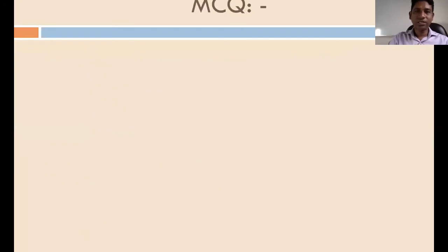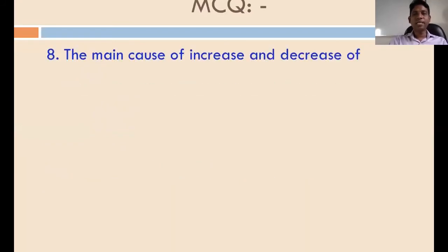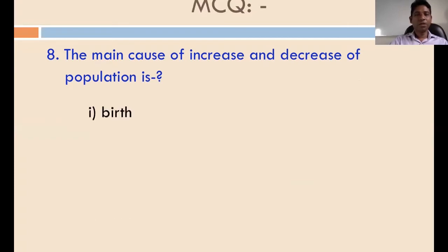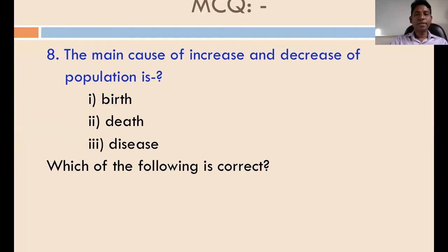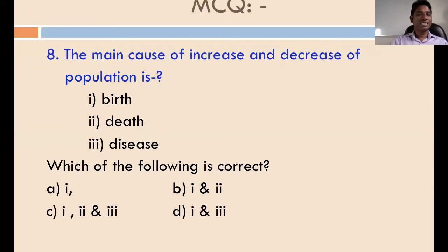Question number eight: what is the main cause of increase and decrease of population? The options are birth, death, disease, and combinations. You have to find out the answer. The answer is B — birth and death are the main causes.